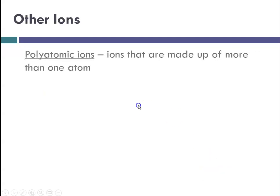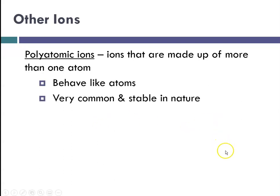Other ions that we talk about are polyatomic ions, and these are ions that are made up of more than one atom. Typically polyatomic ions are covalently bonded groups of atoms that carry a net charge, positive or negative. They behave like atoms, and they're very common and stable in nature, and they have special names. One example would be ammonium, which is the NH4 plus 1 ion.